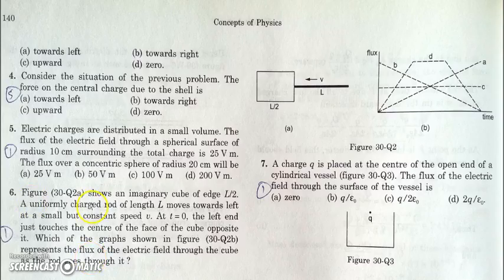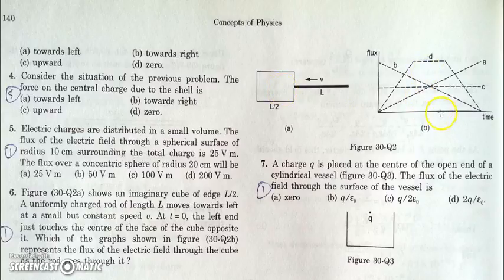In this question number six, there is a rod which is entering into this cube. And we have to find how the flux will change out of these given four options ABCD. Initially as the rod will enter, the flux must increase through the cube. And when the rod is completely inserted, have a look at the diagrams.